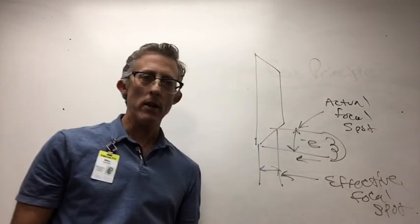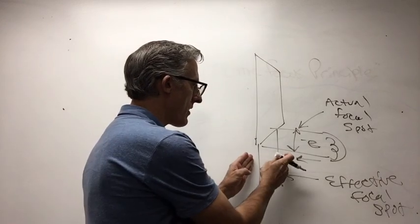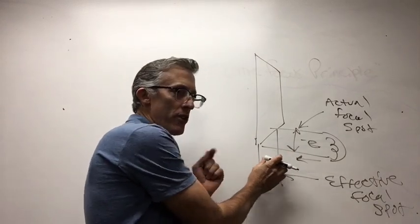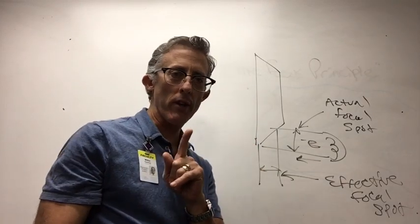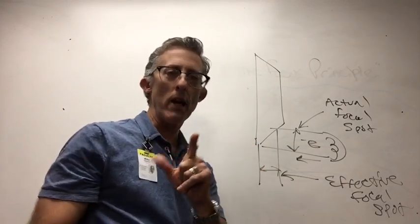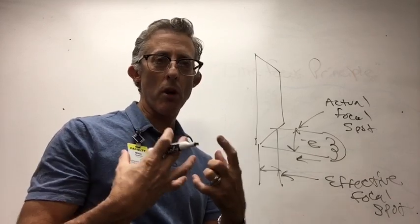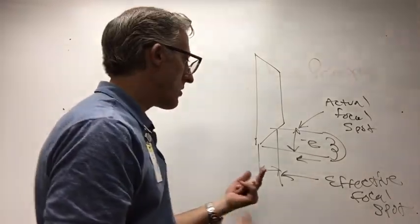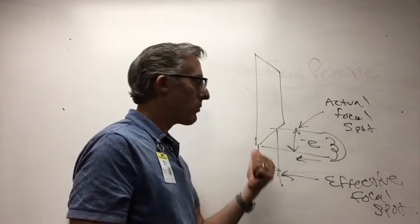Because our goal, if we were engineers and building an x-ray tube, our goal would be to make this, the width of this effective focal spot, as narrow as possible. That's going to do one very important thing, folks. That's going to improve the detail of your radiographic image. It's going to make everything sharper and easier to visualize. But this has to be narrow. So how can we do that?